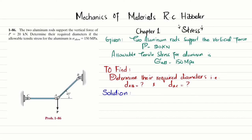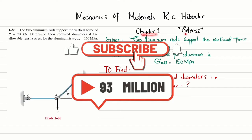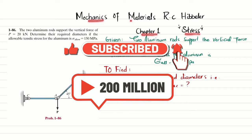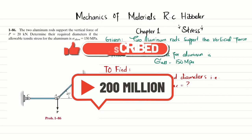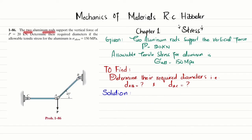Welcome back. Problem 1-86, this problem is taken from Chapter 1, Stress, from the book Mechanics of Materials by R.C. Hibbeler. The statement is: the two aluminum rods support a vertical force of 20 kilonewtons. Determine their required diameters if the allowable tensile stress for the aluminum is 150 megapascals.